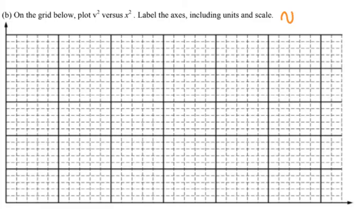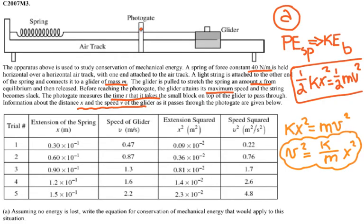So v squared is equal to k over m x squared. So on the grid below, plot v squared over x squared. Label the axis including the units and scale. So I'm going to use this table for my x squared and v squared to plug in into the graph. And when the graph is ready, I'm going to come back and show you the graph.